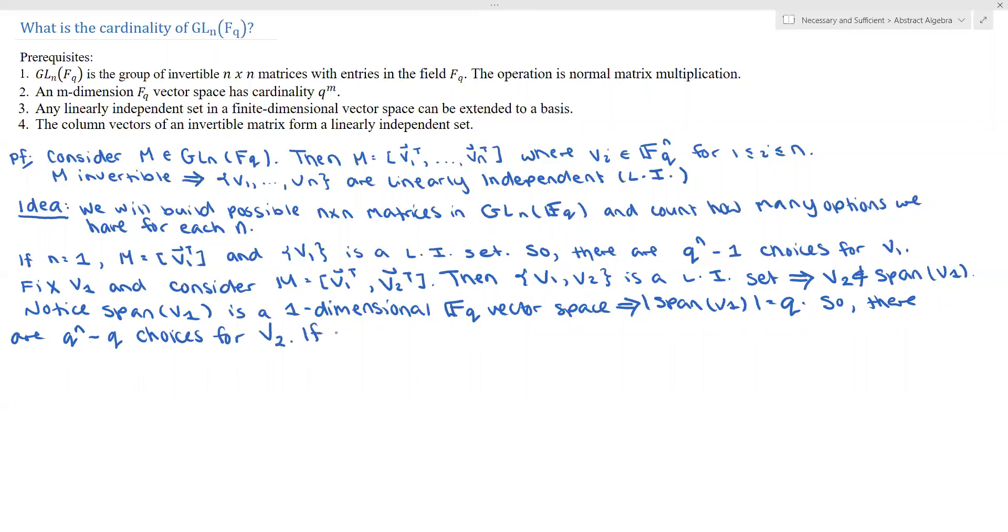So if we continue building our matrix like this. So let's say we have given V1 through Vn minus 1 fixed.